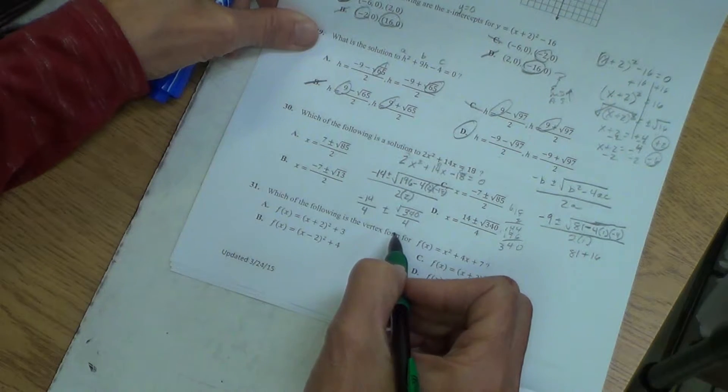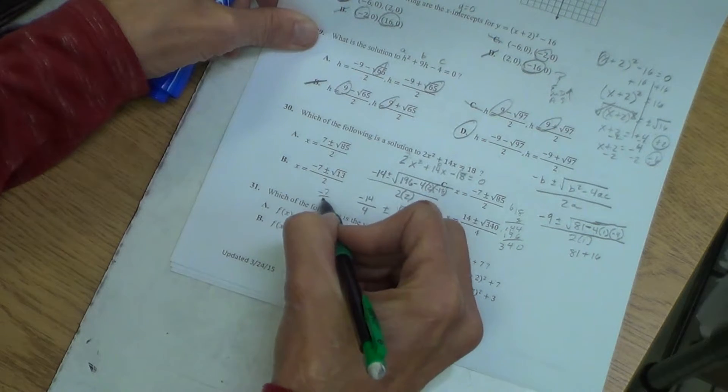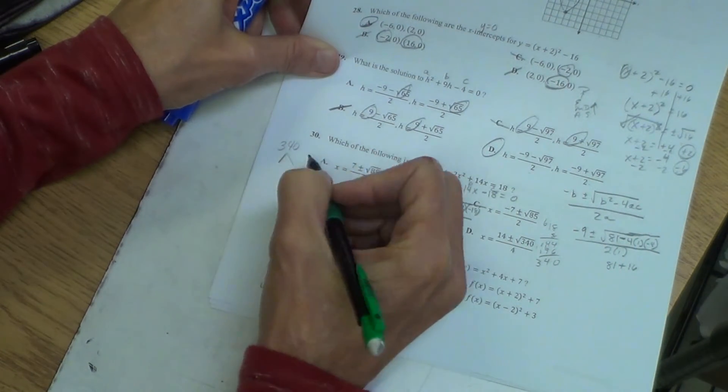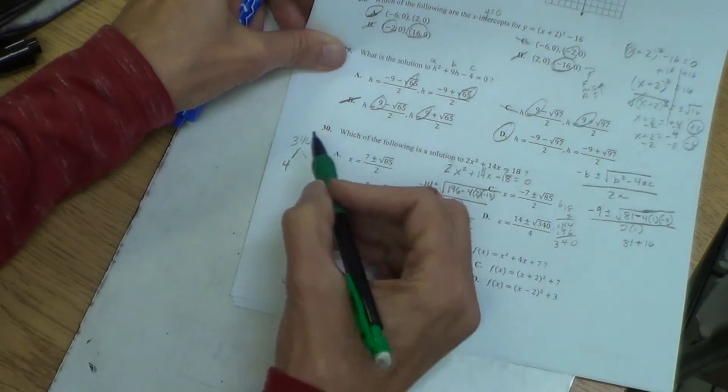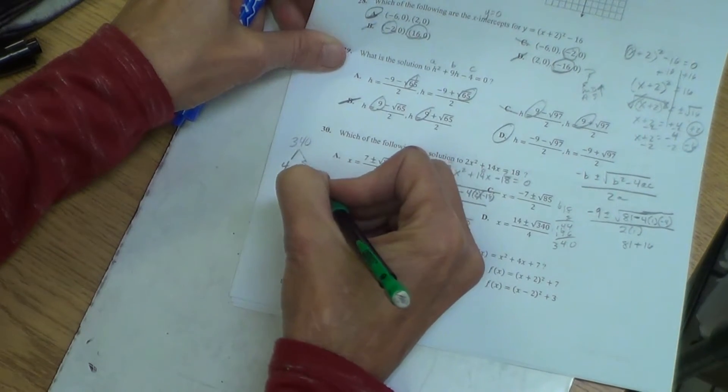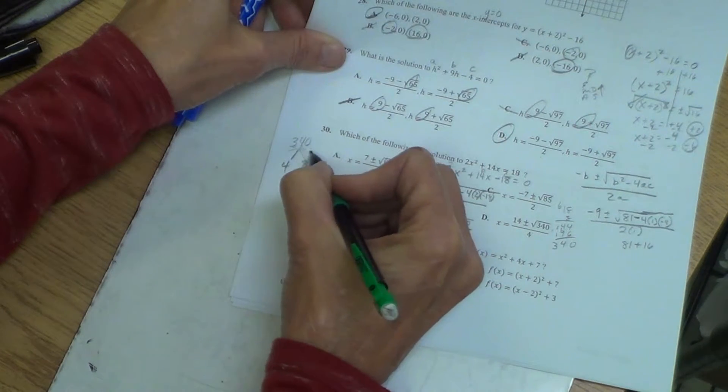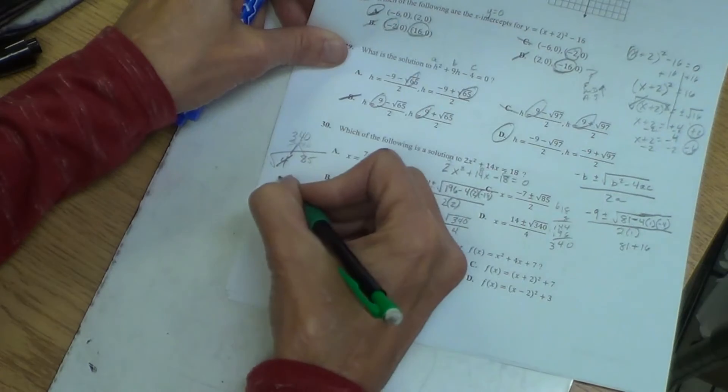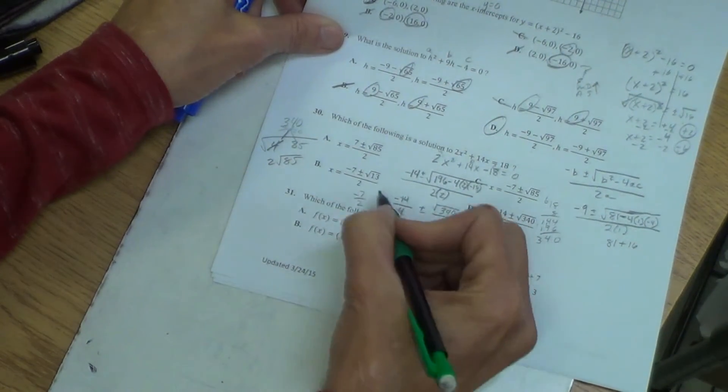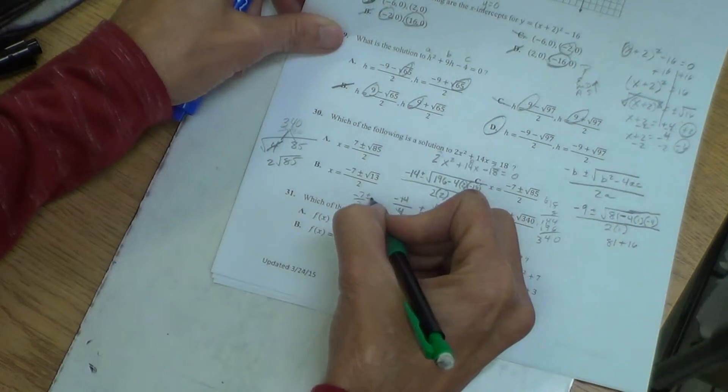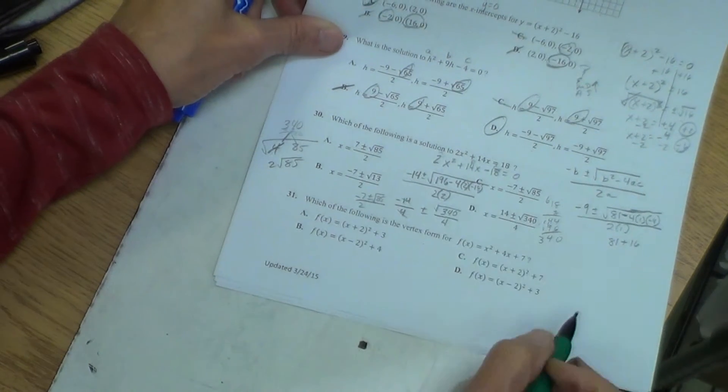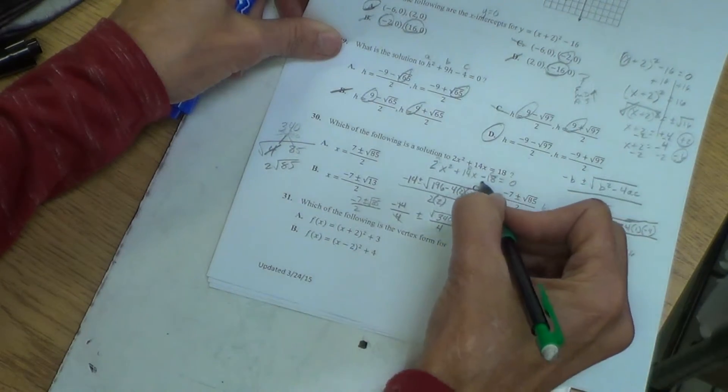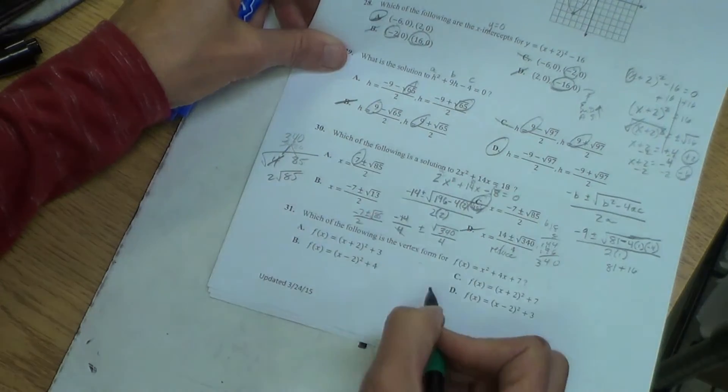We can reduce this to being negative 7 over 2. Question is, can we reduce this one? If we break down 340, will 4 go in there? We know that it will because the last two digits. 4 will go into 40. So 4 will go into 340, 85 times. So when we bring that out of the radical, it would become 2 radical 85. That would reduce. So we would have plus or minus radical 85 over 2, which means that we can put them back over a 2 by themselves. So this one was correct, but not reduced. This one up here appears to be correct. This one does not have a negative 7, and this one does not have the 85.